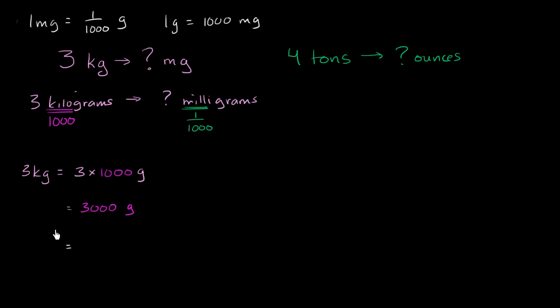So this is equal to 3,000 grams. Each of those are equivalent to 1,000 milligrams. So times 1,000, times 1,000. And this is going to give us the number of milligrams. And what is this going to be? Well, 1,000 thousands is a million. So 3,000 thousands is 3 million. So this is going to get us 3 million milligrams.